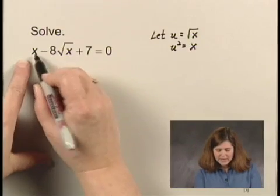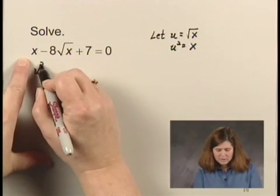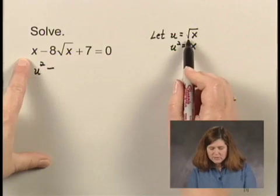It would look like this. x is u squared, and then square root of x is u.